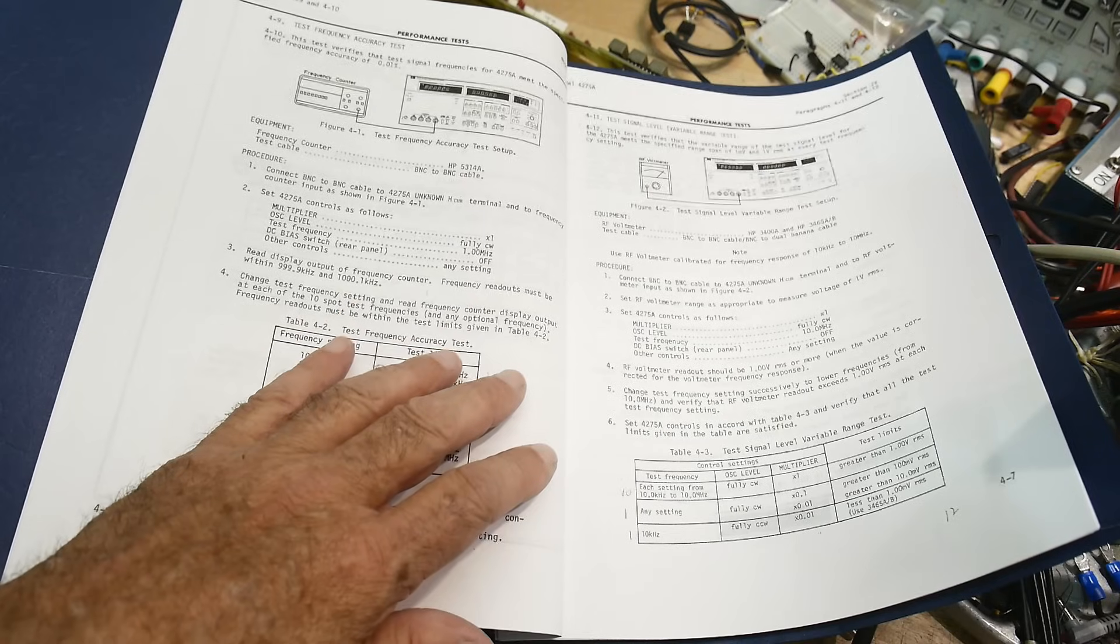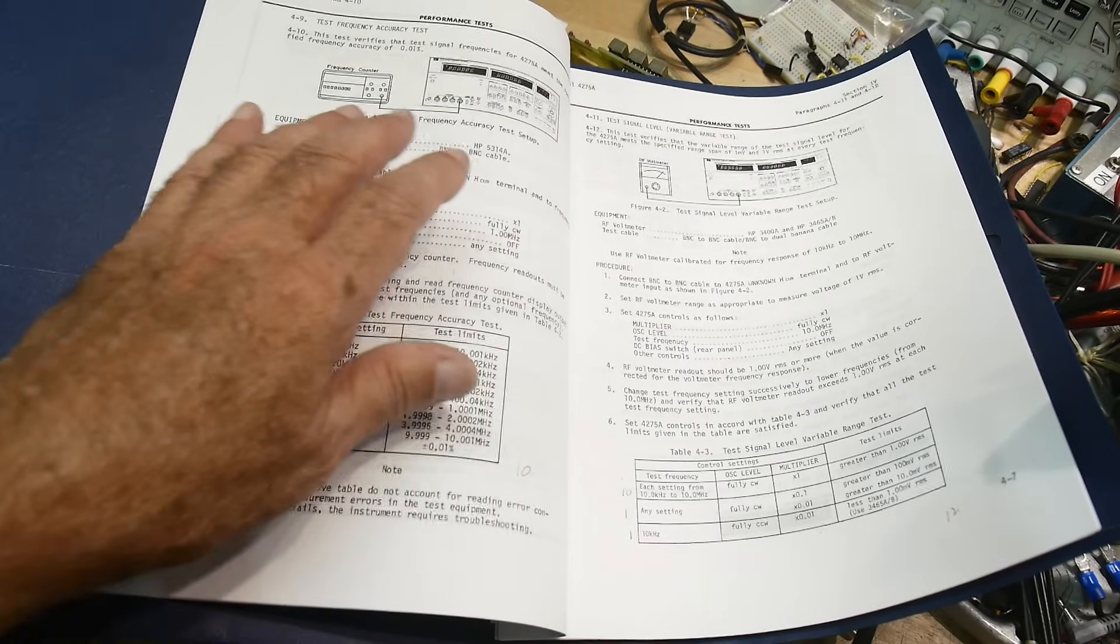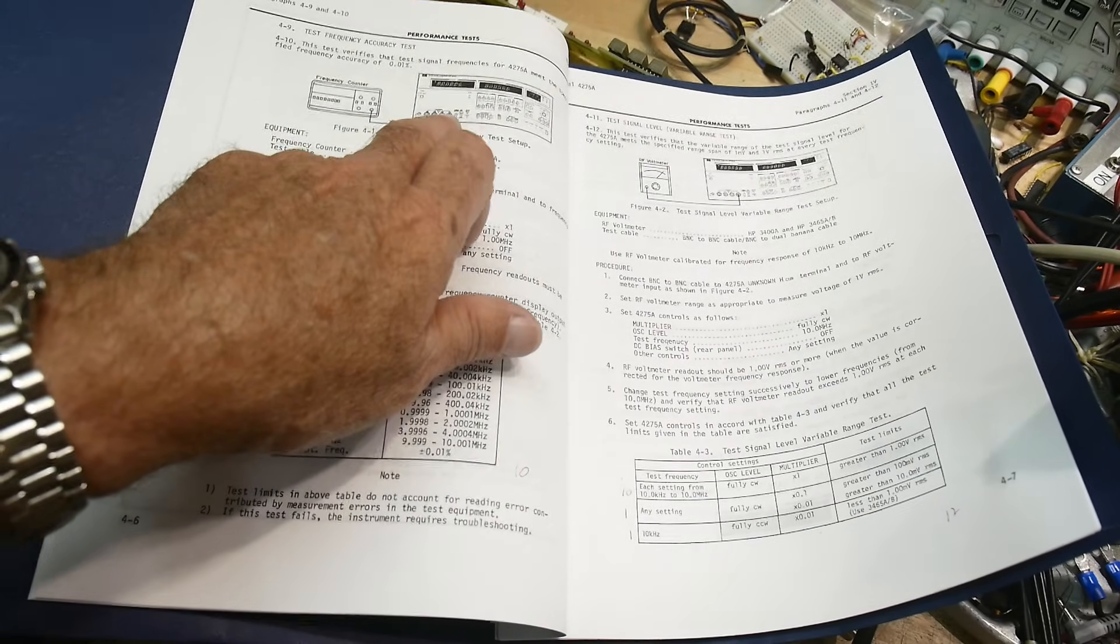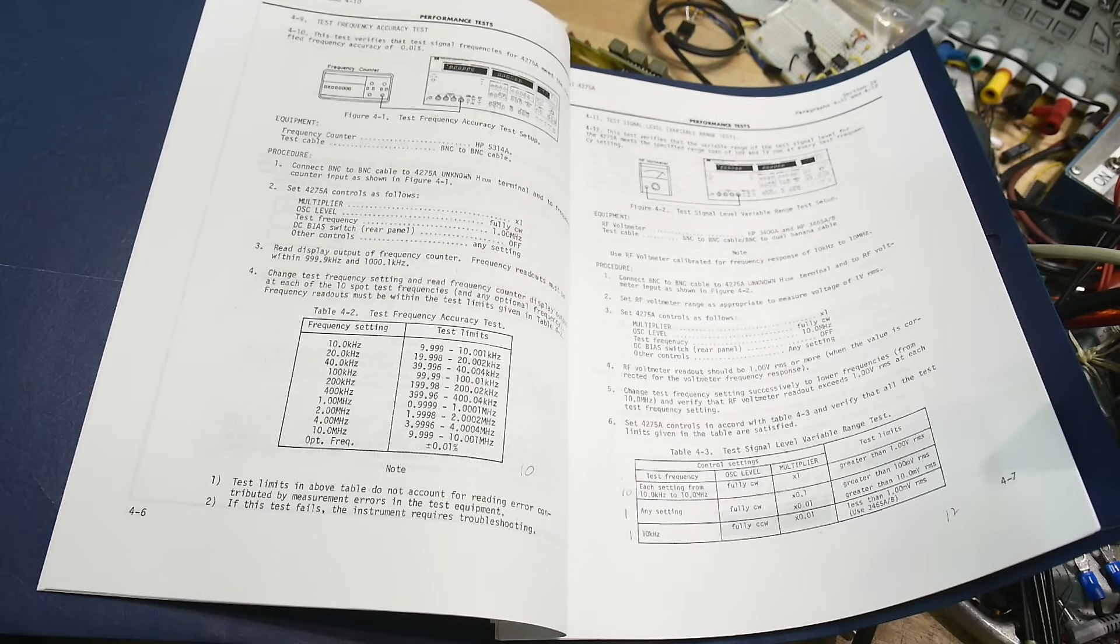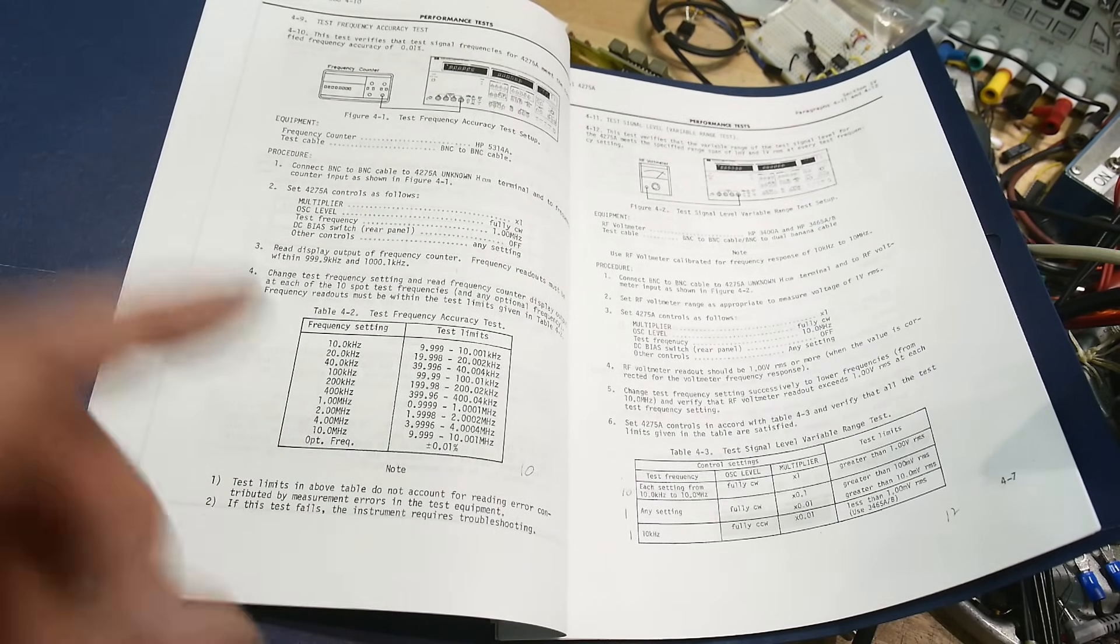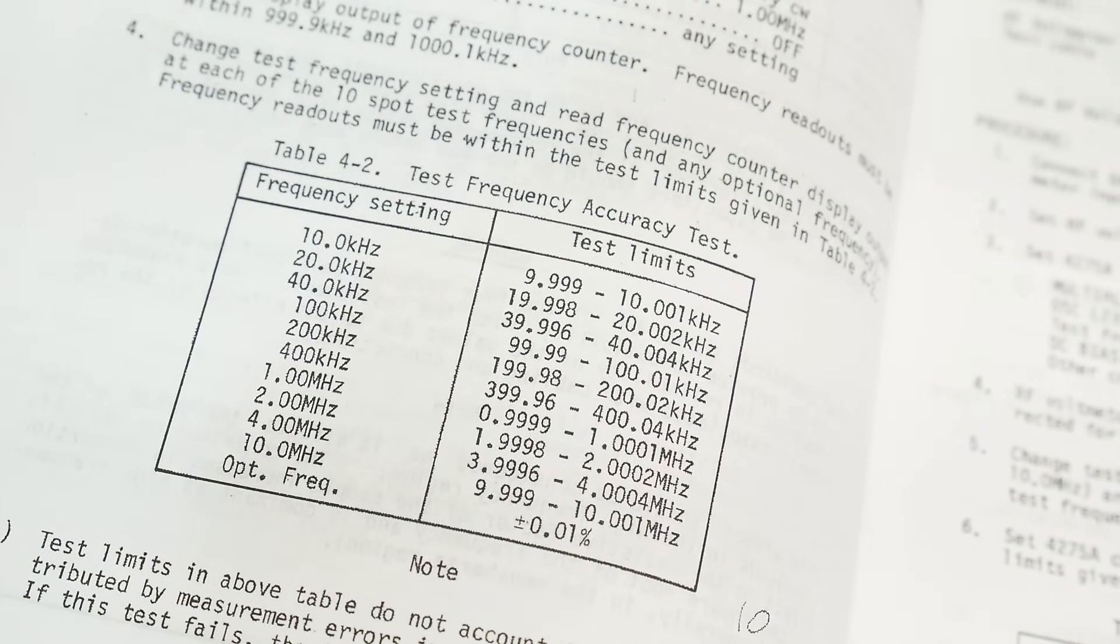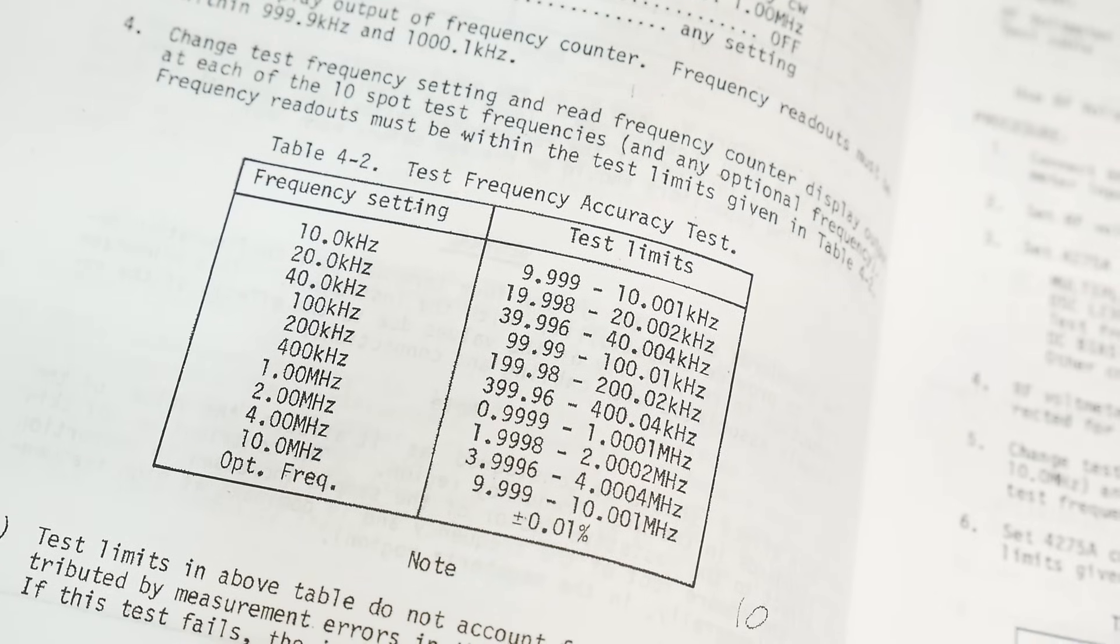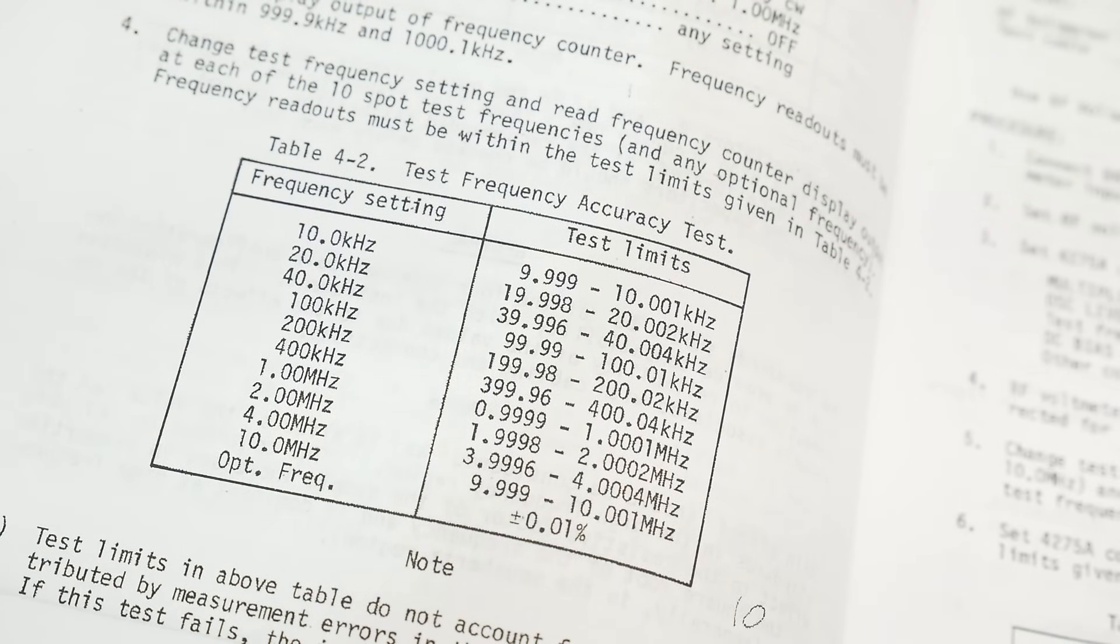The very first performance test is, is it outputting the frequencies that you say on the front panel? So you take the fourth BNC and run it into a frequency counter, and then you run it through all of the frequencies, and they should be pretty darn accurate, plus or minus 0.01%.